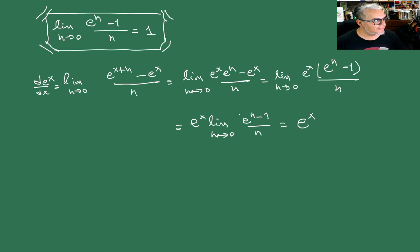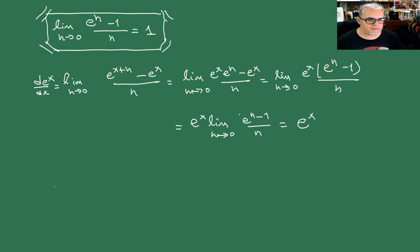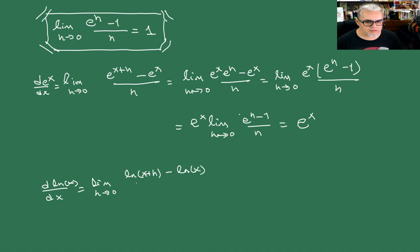Para el caso del logaritmo natural, vamos a escribir la derivada de ln(x) respecto de x como el límite cuando h tiende a cero de [ln(x+h) menos ln(x)] sobre h. Esto es el logaritmo de (x+h)/x sobre h.